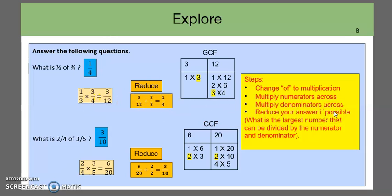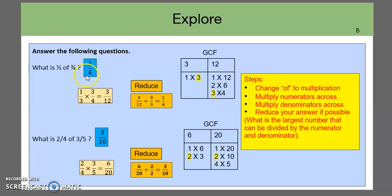The last step is to reduce your answer if possible by finding the GCF — the greatest common factor. For three-twelfths, we find the factors of three: one times three. For twelve: one times twelve, two times six, three times four. The largest number shared by both is three. Therefore, we divide the top and bottom by three: three divided by three is one, and twelve divided by three is four. Our final answer is one-fourth.